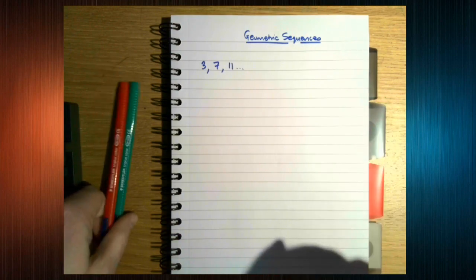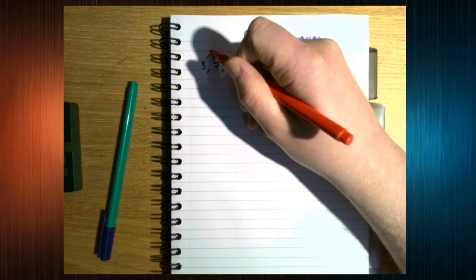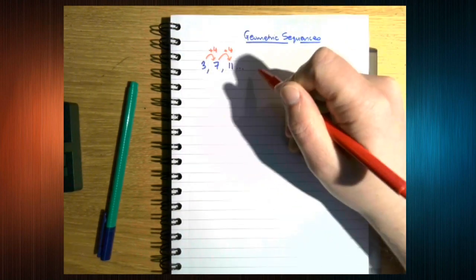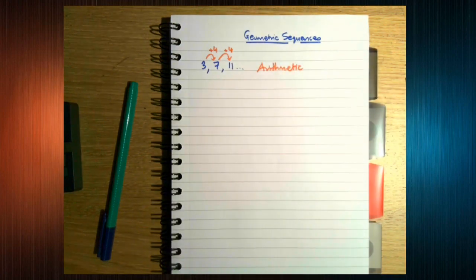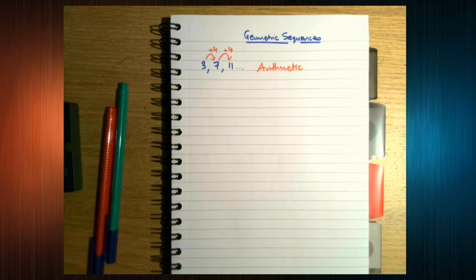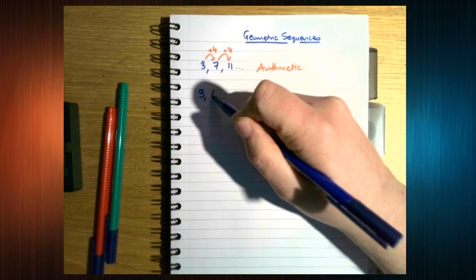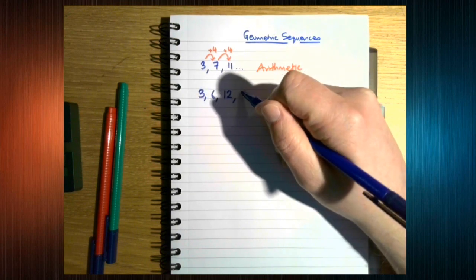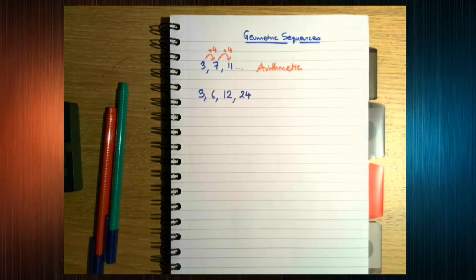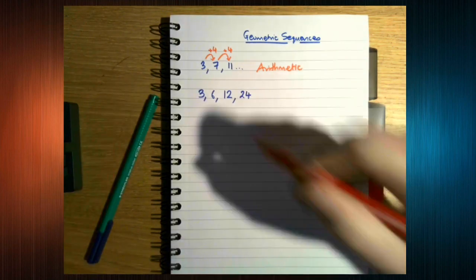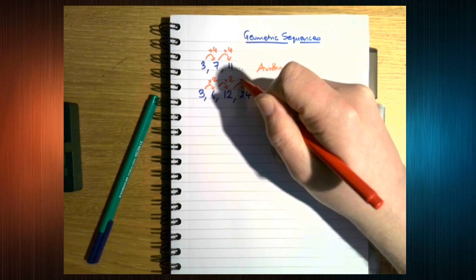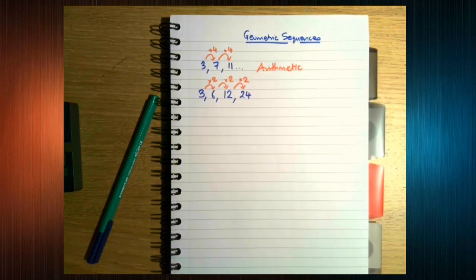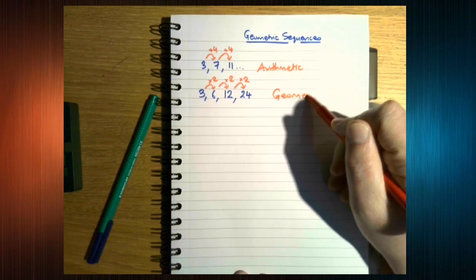Where we're adding the same number every time. So the difference between arithmetic and geometric is instead of adding we are multiplying. Because we are timesing by 2 every time, that makes this geometric.